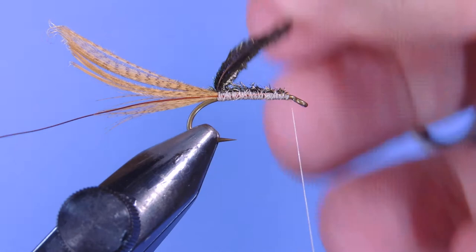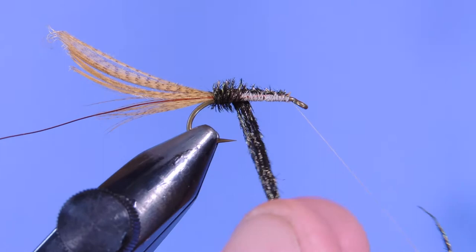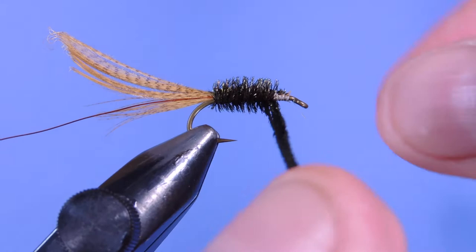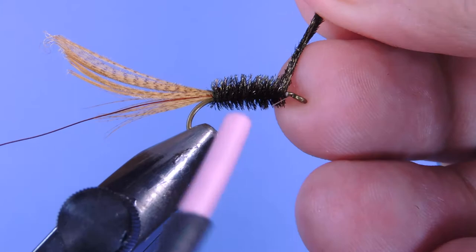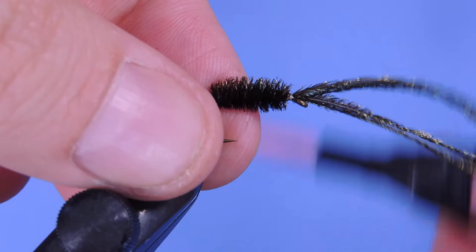And we'll wind our thread forward. You can reinforce these if you like. I'm just going to wrap these, kind of gives a little bit fuller body. We're just not going to go right to the eye. We want to give ourselves a little bit of room to work at the head of the fly.